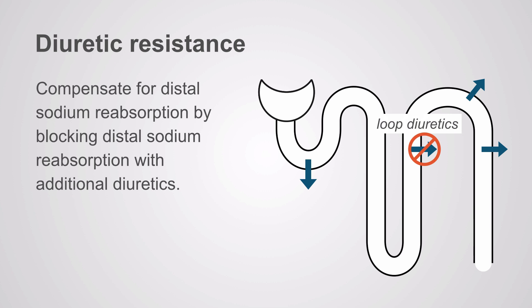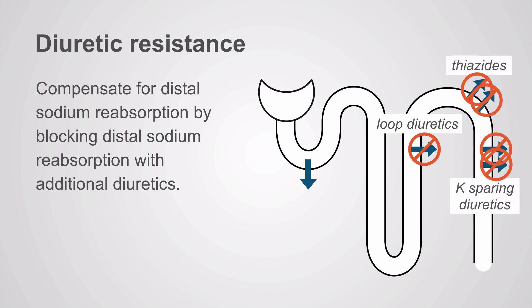The response to compensate for distal sodium reabsorption is to block it with additional types of diuretics. With loop diuretics driving increased sodium reabsorption distally, we compensate by either adding thiazide-type diuretics, potassium-sparing diuretics, or both.